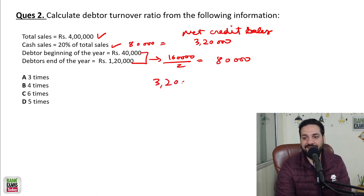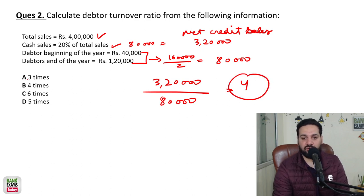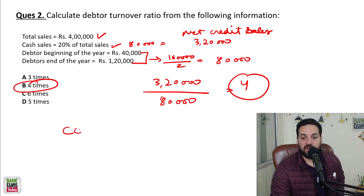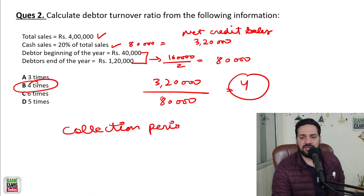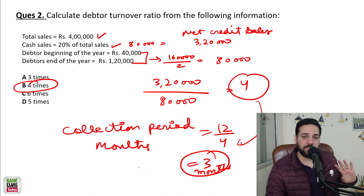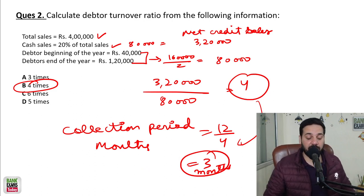Net credit sales 3,20,000 divided by average debtors 80,000 gives us a debtor turnover ratio of 4 times. If we want to calculate the collection period in terms of months: 12 divided by 4 equals 3 months. In terms of days, you can do 365 divided by 4. Three months is the correct answer.